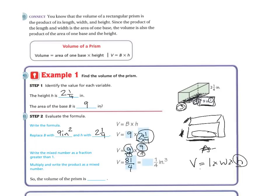Now if I'm going to reverse that, 4 can go into 81 20 times, and you have 1 left over. So you get 20 1/4 inches cubed.